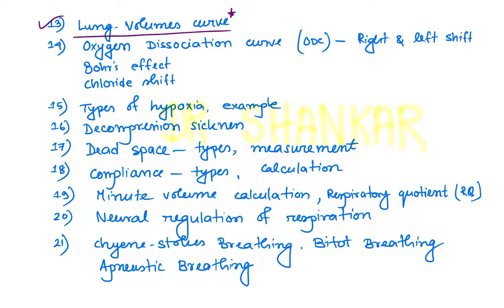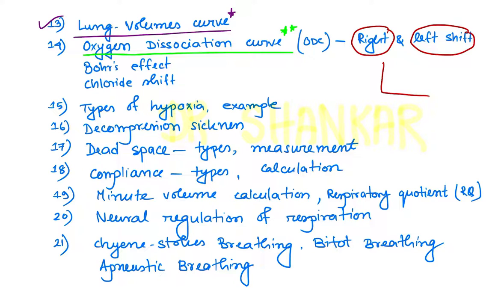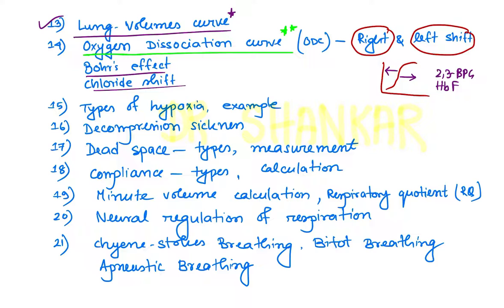Next, the oxygen dissociation curve is a very important topic. The main important aspect of the ODC is the right and left shift. What are the factors that cause right shift of the oxygen dissociation curve, and what are the factors that cause left shift — like carbon dioxide, oxygen concentration, pH changes, temperature, effect of 2,3-BPG, or effect of fetal hemoglobin (hemoglobin F). You should know these factors very well along with Bohr's effect, chloride shift, and reverse chloride shift.